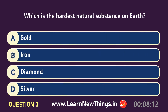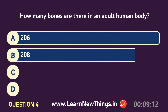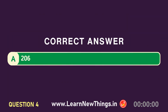Which is the hardest natural substance on Earth? Diamond. How many bones are there in an adult human body? 206.